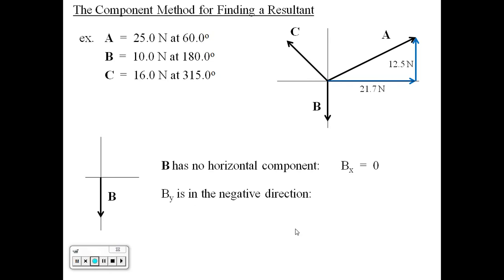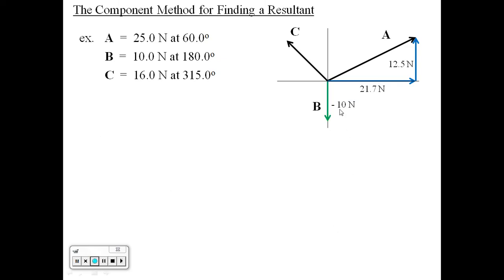However, it's pointing down. So we need to assign a negative sign to it. So B sub Y is negative 10 Newtons. By inspection we can see that it goes in the negative Y direction.